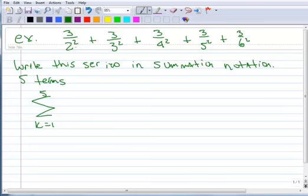So what you need to do is look at the terms here and see what's constant and what changes. I notice that the three in the numerator is always in the numerator. That never changes. So in my formula here, I can have a three because that never changes.